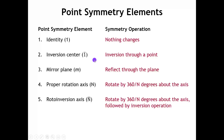Then we have the inversion center. The inversion center does what it implies — it inverts through a point. In a molecule, we have a point that is unchanged by all of the symmetry operations; that's where the inversion center would lie. If we call that the origin, it would take an atom with coordinates x, y, z in a Cartesian system and put that atom at coordinates minus x, minus y, minus z.